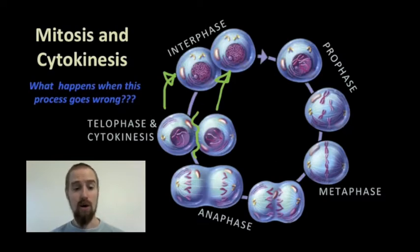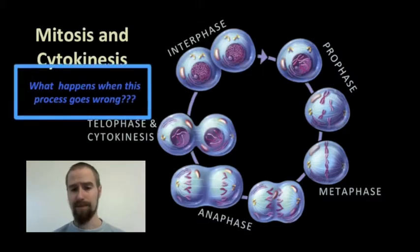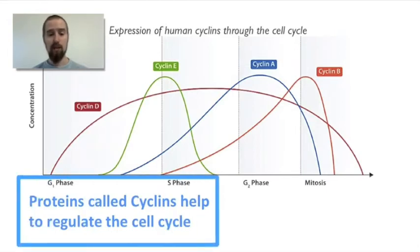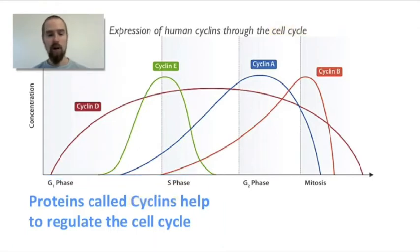It is all very orderly, at least it's supposed to be. But what happens when it goes wrong? Several related protein molecules called cyclins are responsible for regulating the timing and events of the cell cycle. When certain kinds of mutations occur in the genes responsible for cyclin production, the mechanisms that regulate the cell cycle may be disrupted, causing uncontrolled cell division, the effects of which can be disastrous.